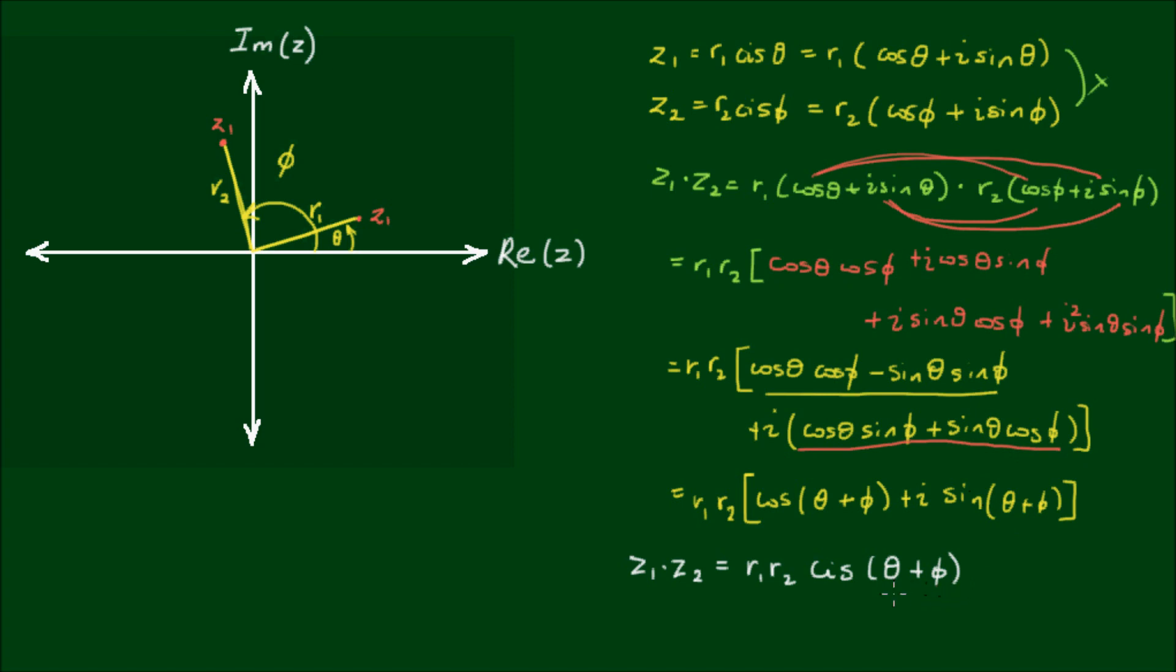So this is the multiplication of two complex numbers in their polar form. If I was to plot this on the complex plane, it would look something like this. My apologies, this z should have a subscript of 2, so z1 times z2 would be out here somewhere.